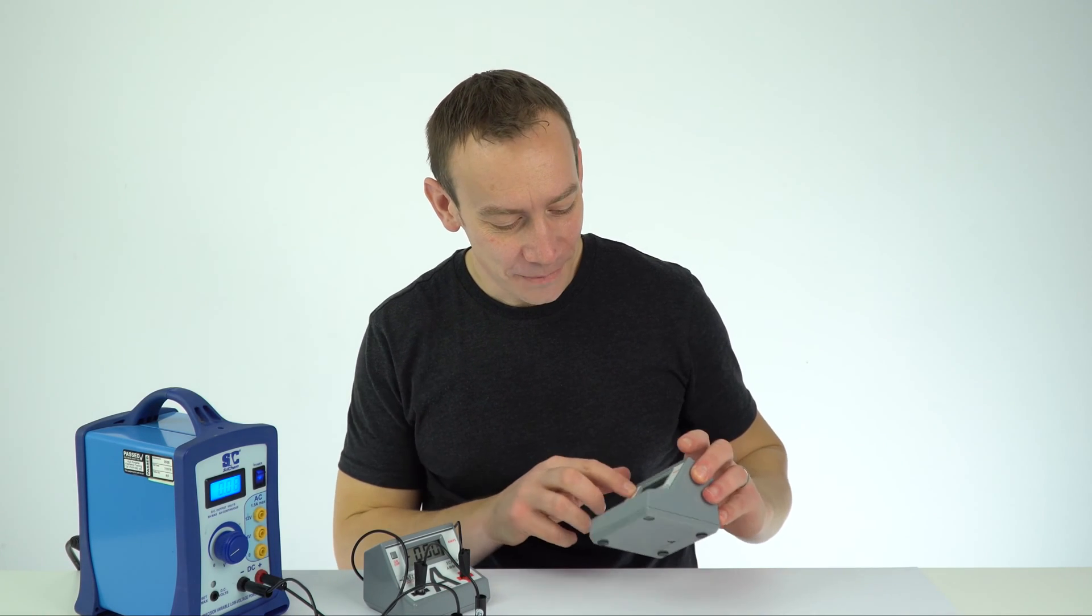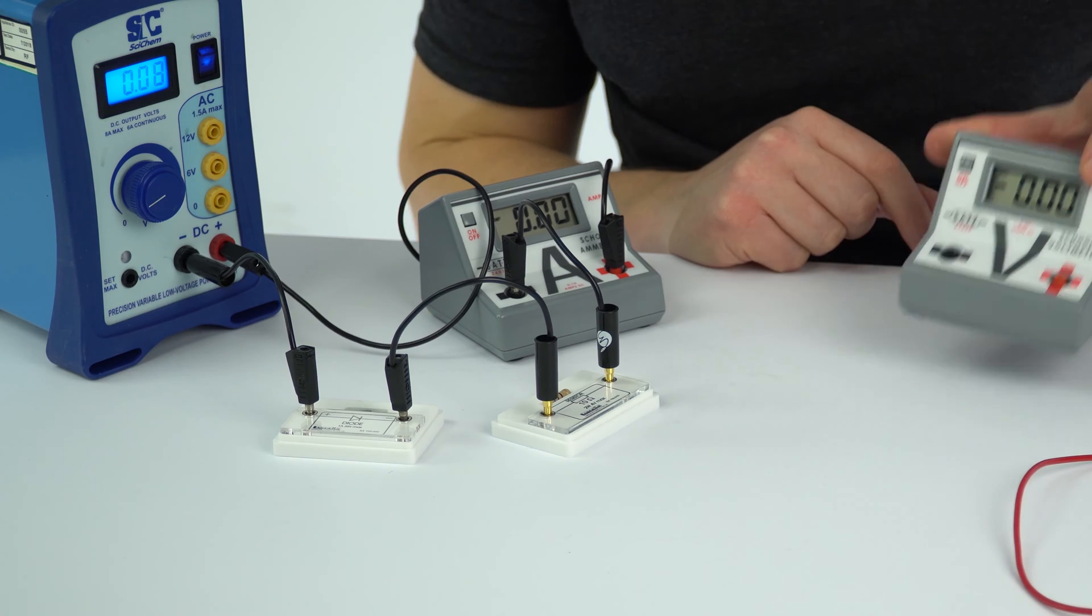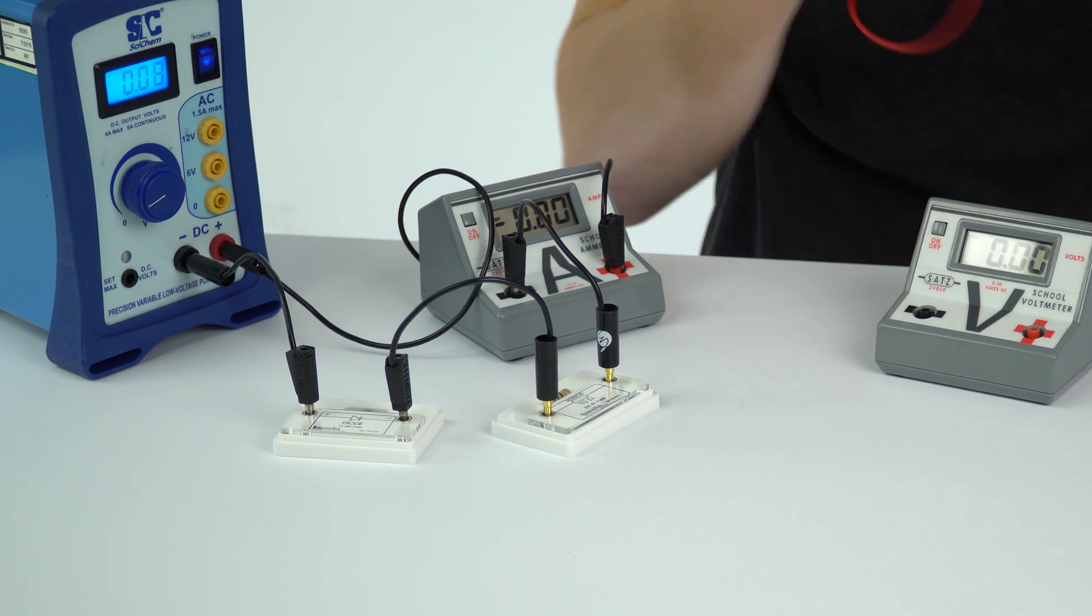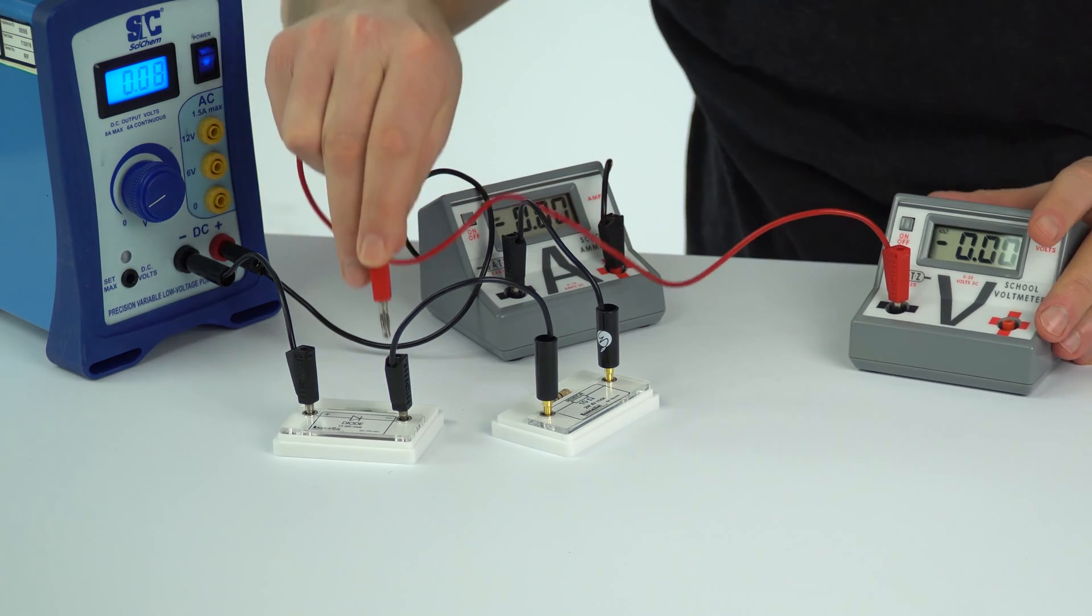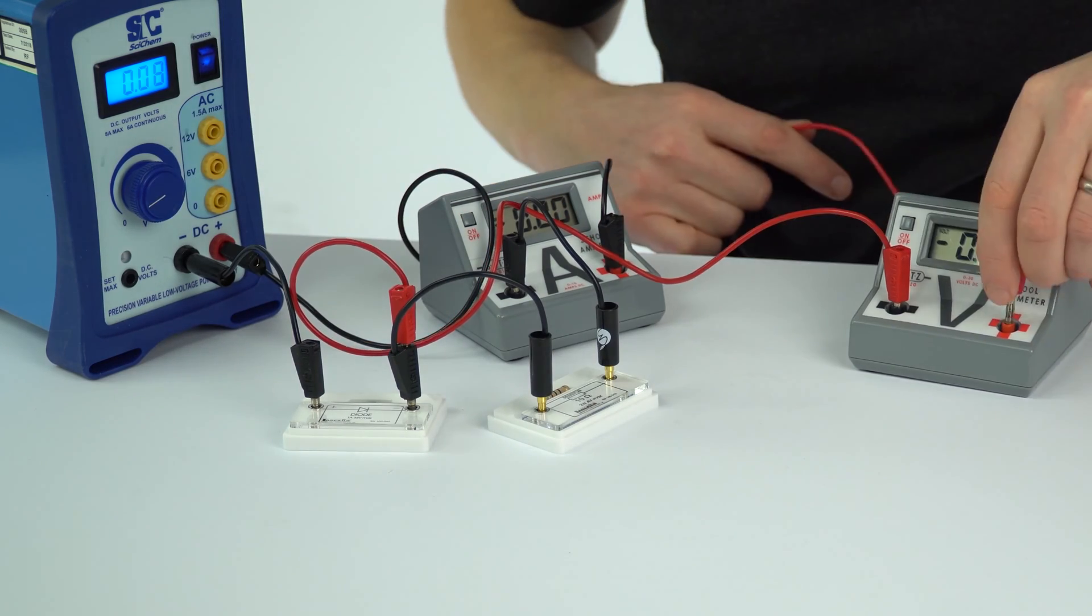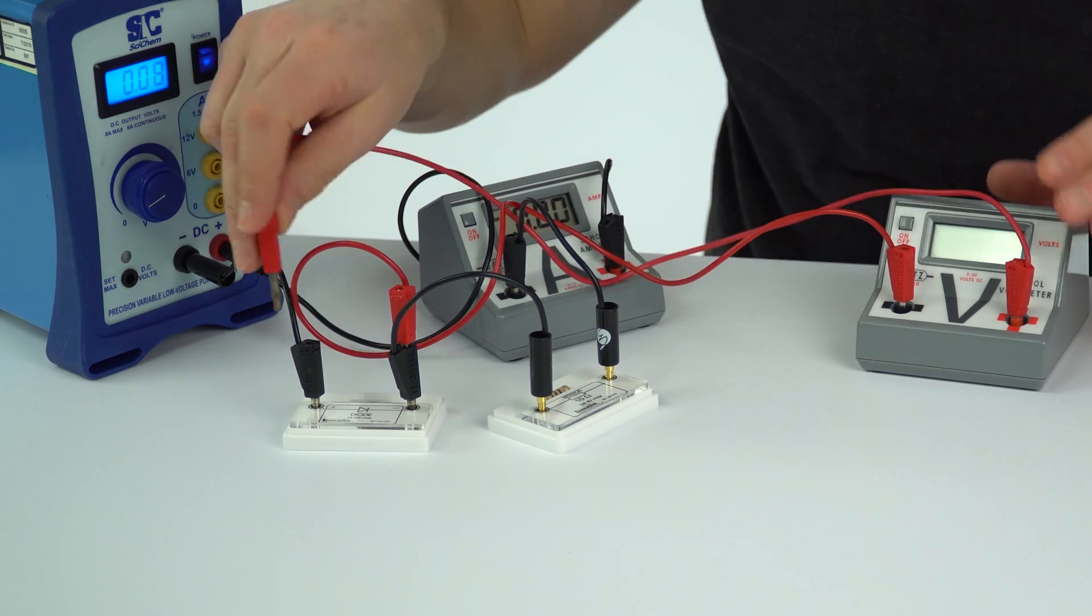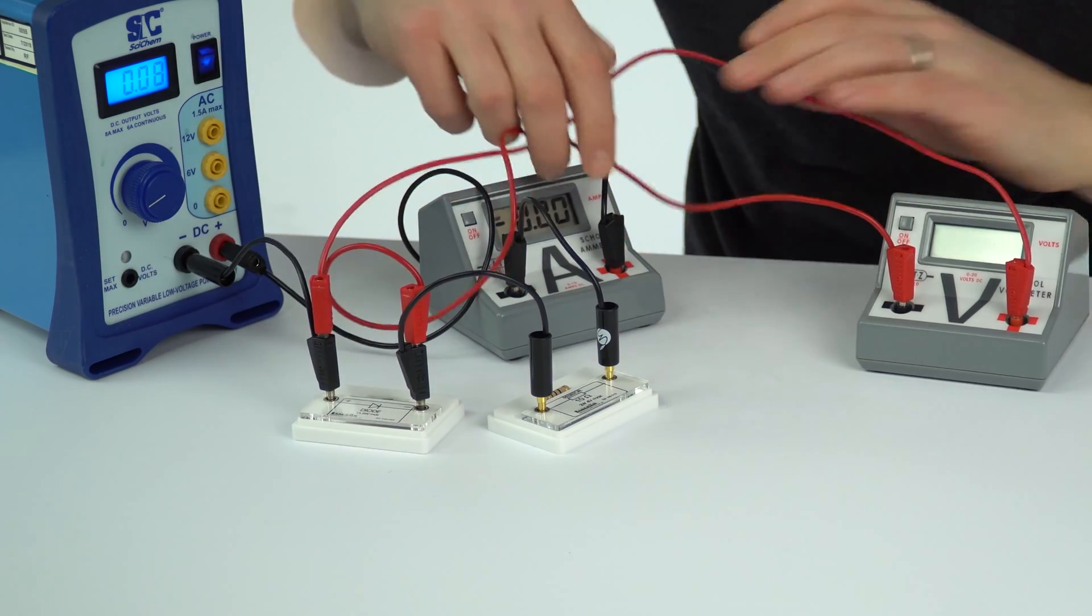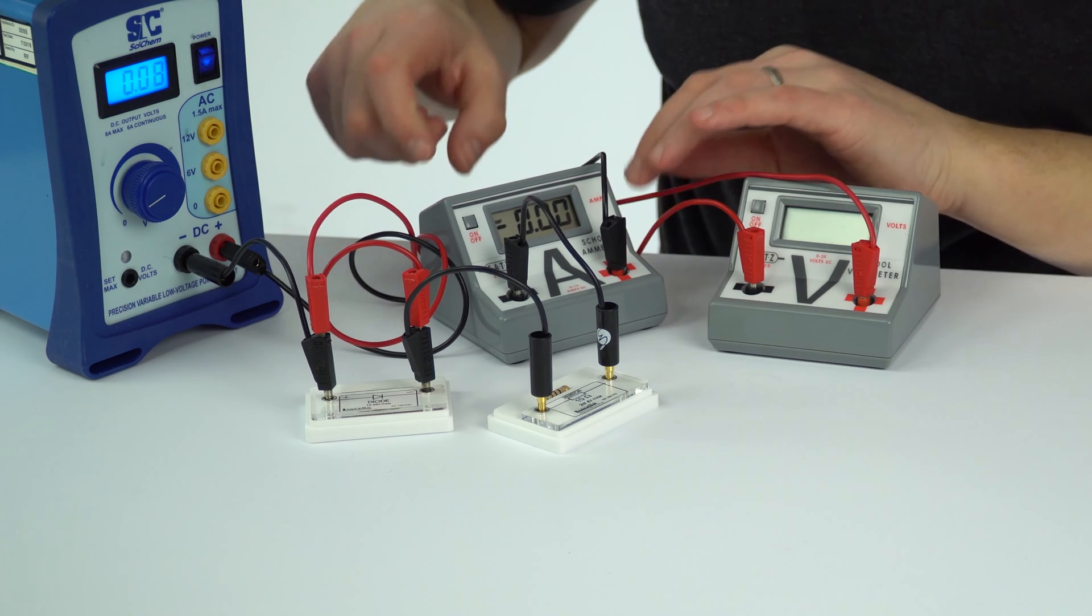The second thing I'm going to be doing is adding in my voltmeter, so again just attaching it across the terminals of this diode. If I do that, maybe just get some of these wires out of the way.